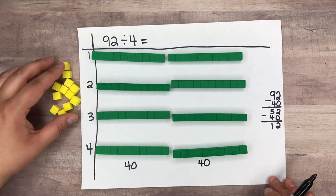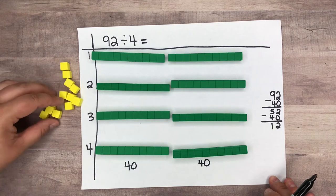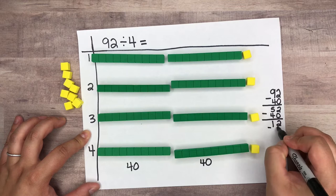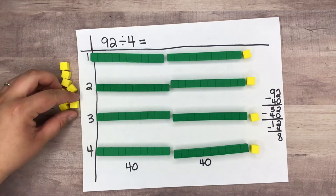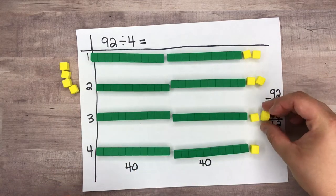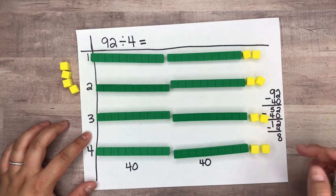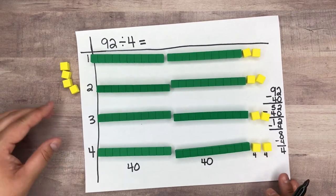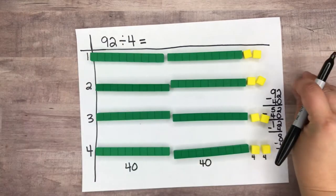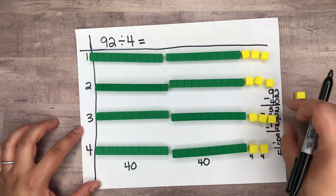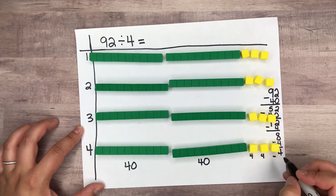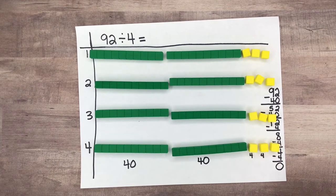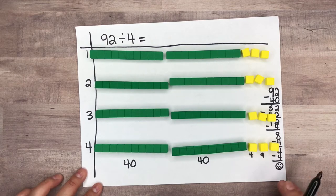Now we're going to divide out these 12 ones into groups of 4. I take out 1, 2, 3, 4 — that's 4 taken away, leaving 8. Then another 1, 2, 3, 4 — leaving 4. Then my last 1, 2, 3, 4 — now I have 0, which is exactly what I wanted. I have no remainder and everything divided out evenly.